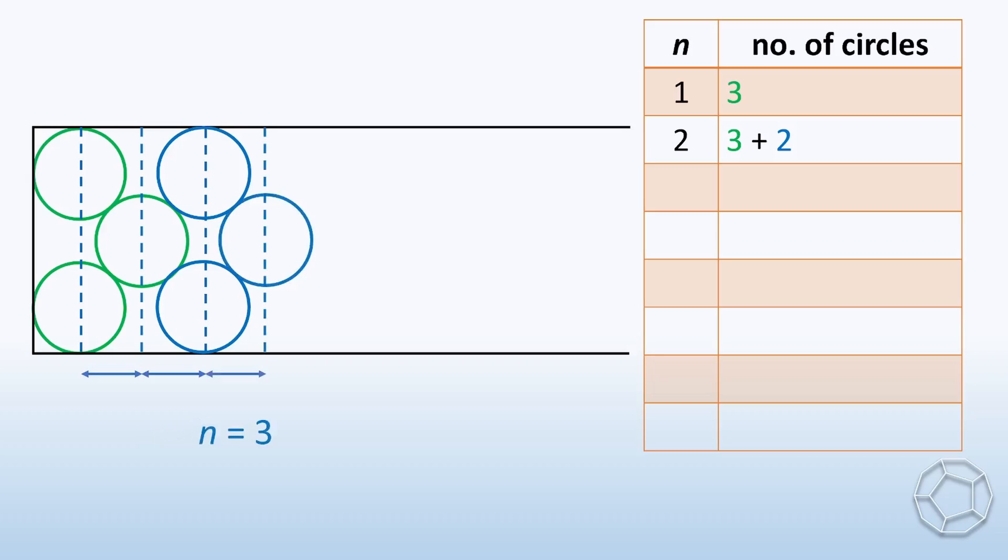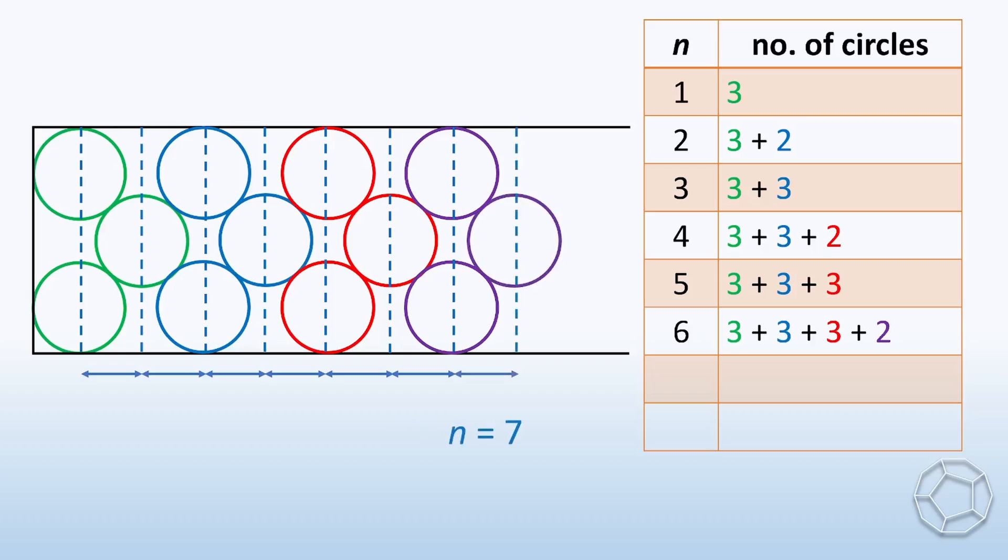When n is equal to 3, there are 2 groups of 3 circles. We use green and blue for each group. When n is equal to 4, again, we add 2 more red circles. Repeat this process for n is equal to 5, n is equal to 6, n is equal to 7, and n is equal to 8.